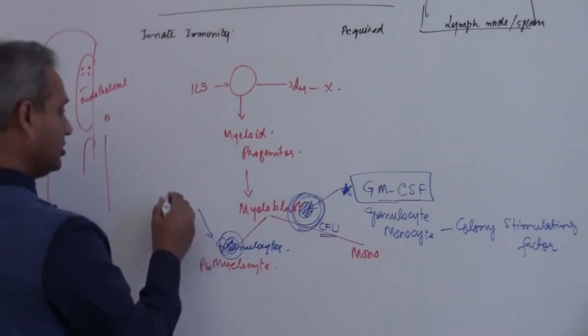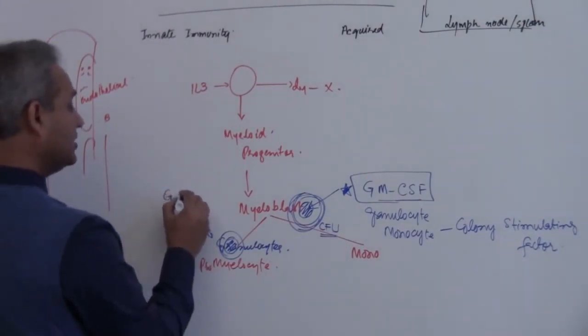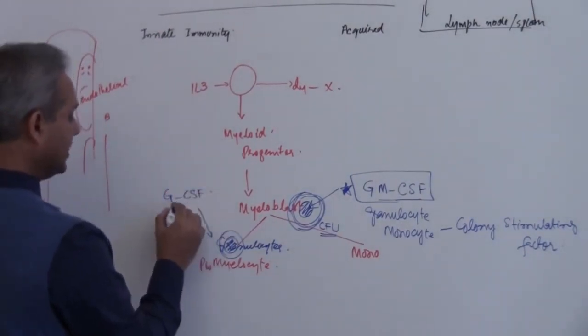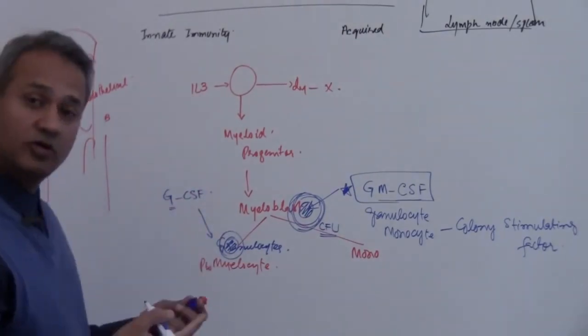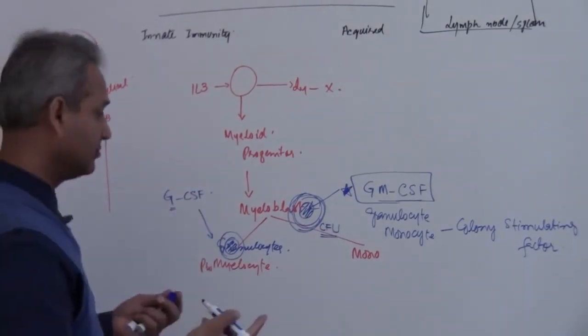What should they be called? They should be called G-CSF. Granulocyte colony stimulating factor. And similarly.